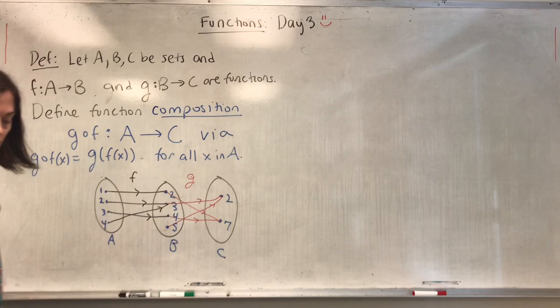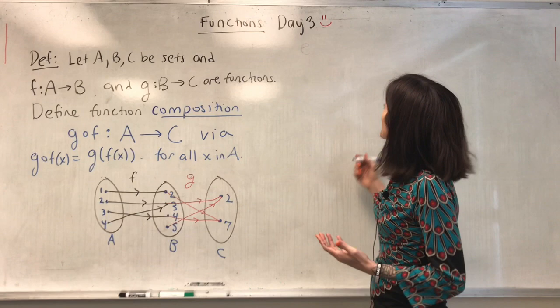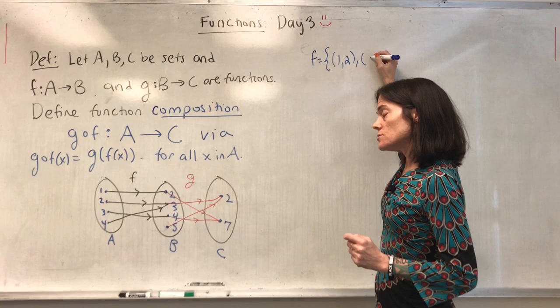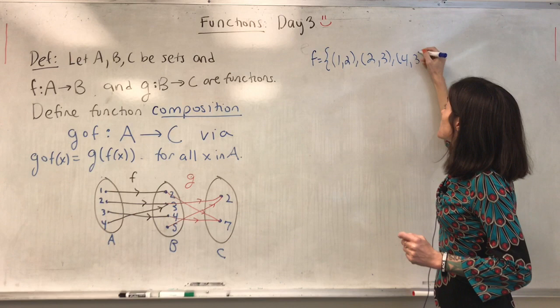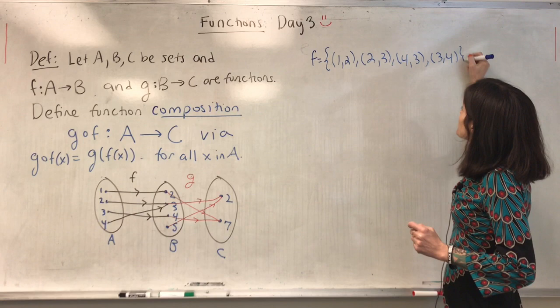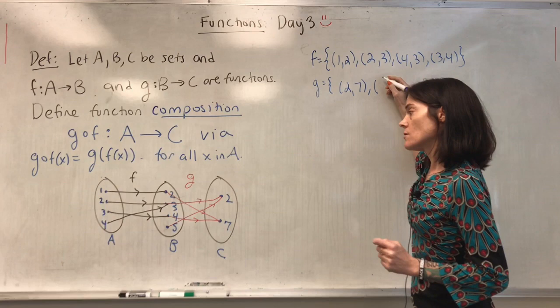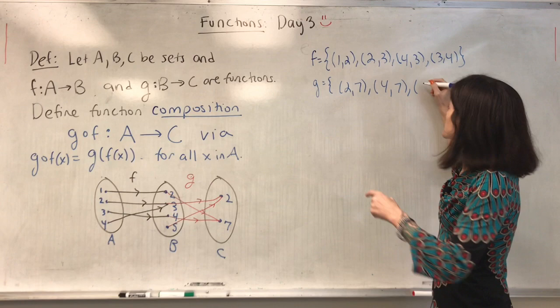Let's write these out as ordered pairs, since that's another way to think about functions. F has: (1,2), (2,3), (3,4), (4,3). G has: (2,7), (4,7), (3,2), (5,2).